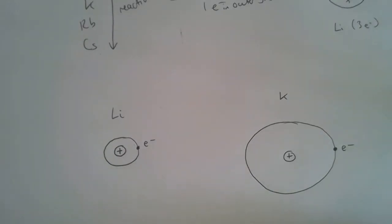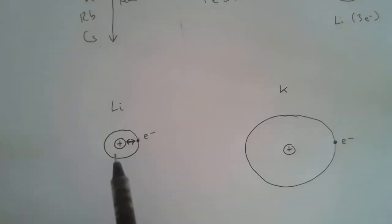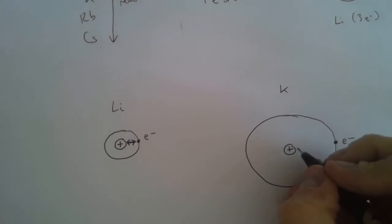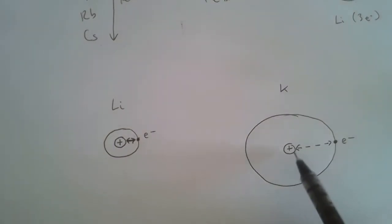In terms of attraction, there is a much stronger attraction between the nucleus and the outer electron because they're closer together in lithium. If we do a similar thing for potassium, that attraction is going to be much weaker because the positive charge and the outer electron are further apart from each other.